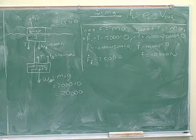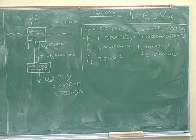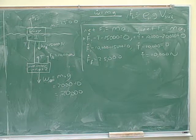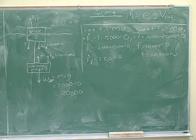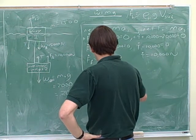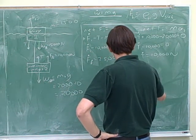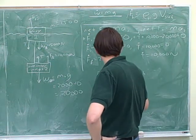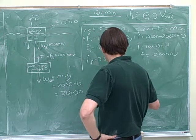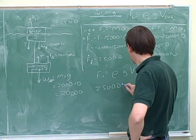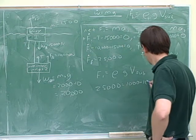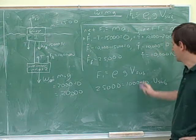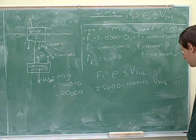So then we found that the buoyant force is 25,000. And so if that buoyant force is equal to rho G times volume of the submerged portion, then we're just solving for the volume. And we know that rho is 1,000 and G is 10 for object 1. Let's finish that off.